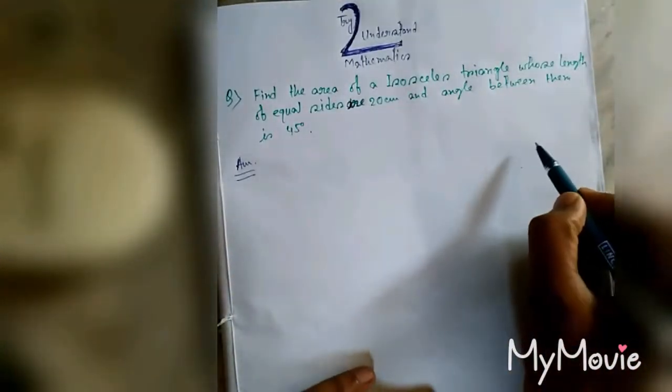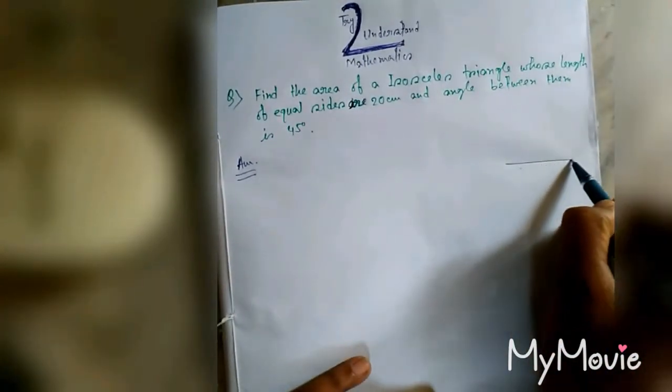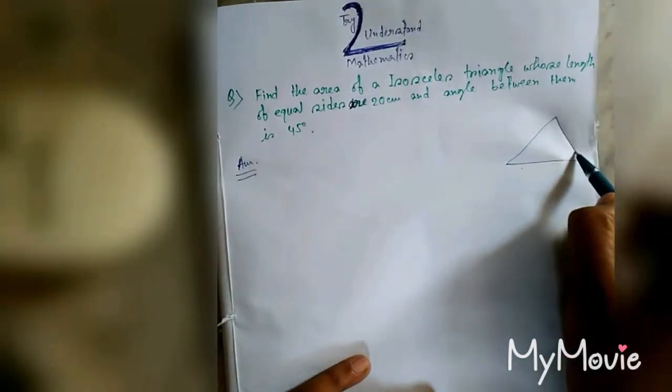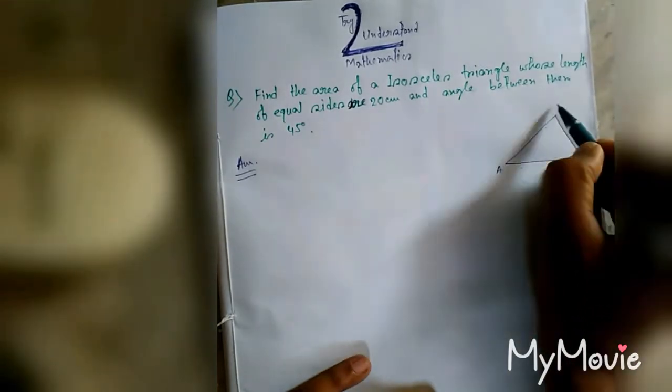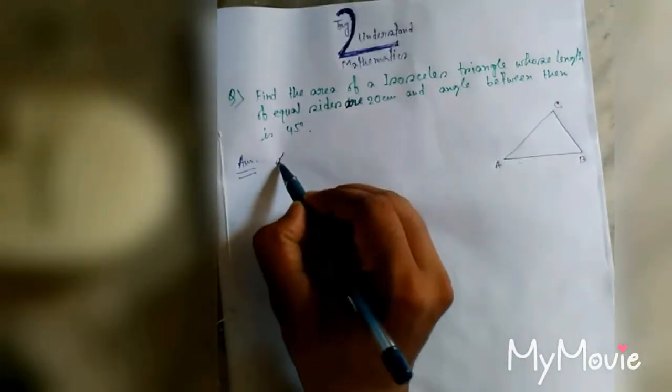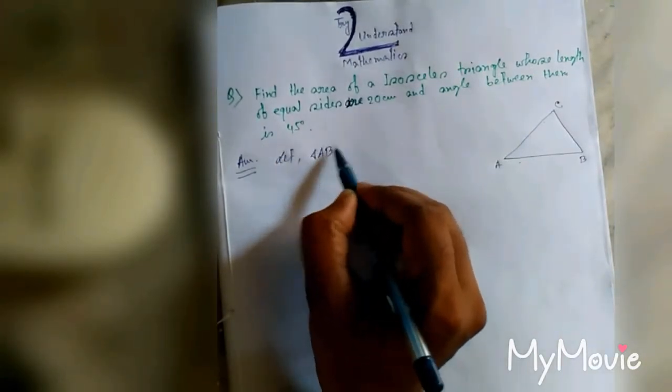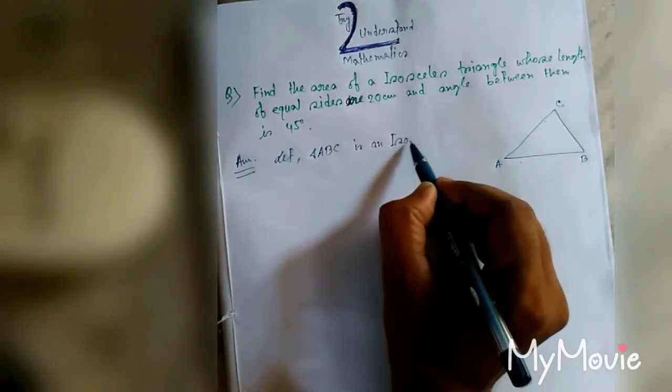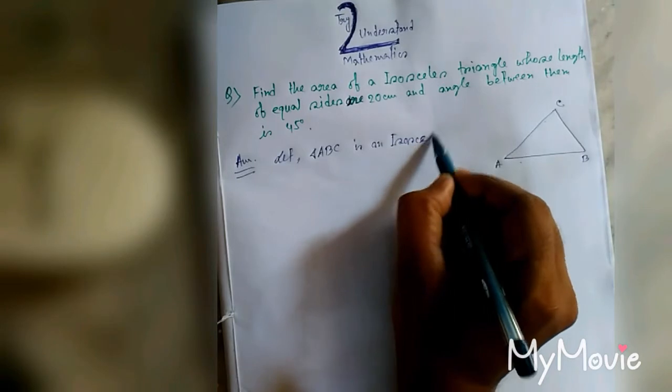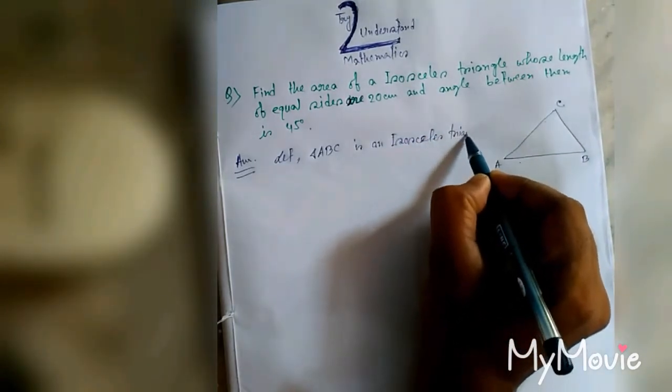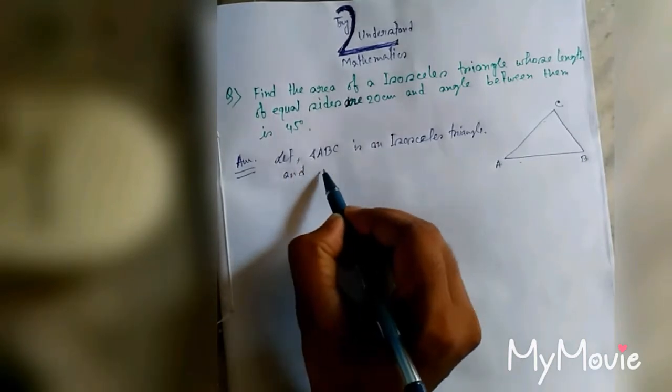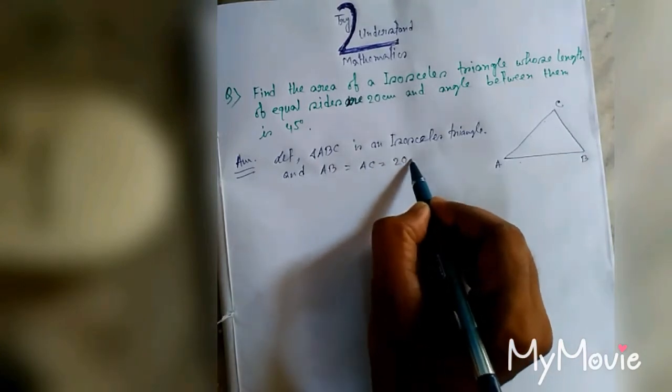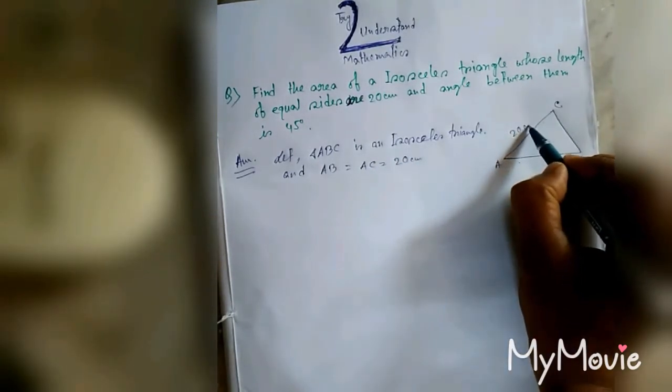Let us draw a picture of an isosceles triangle. Here, triangle ABC. Let triangle ABC and isosceles triangle, and AB equal to AC equal to 20 centimeters. This is our given condition.